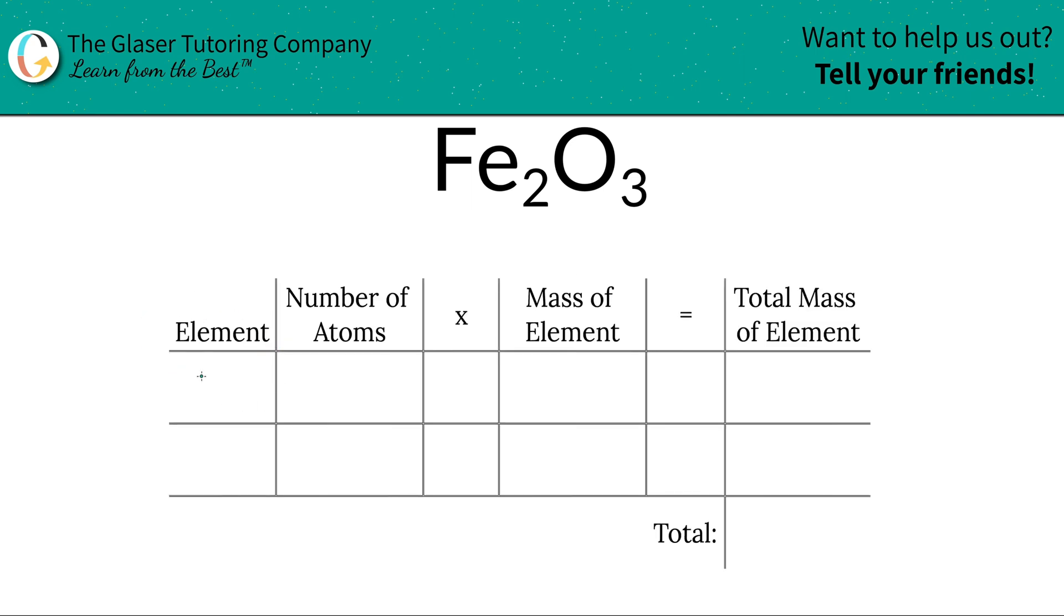So the first thing we're going to do is write the elements down that we see. So we have iron and we have oxygen. Easy enough. Next is the number of atoms. That's where the subscripts come into play. So there are two iron atoms, so we write a two. There are three oxygen atoms, so we write a three.